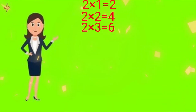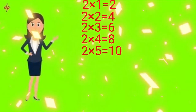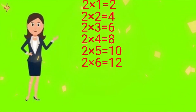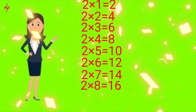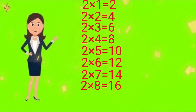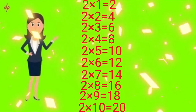2 3 the 6, 2 4 the 8. Two fives are ten. Two six are twelve. Two sevens are fourteen. Two eights are sixteen. Two nines are eighteen. Two tens are twenty.